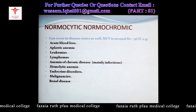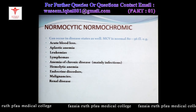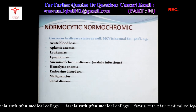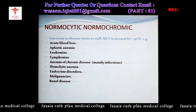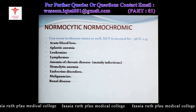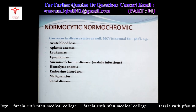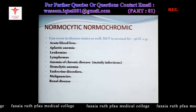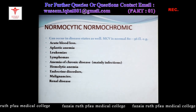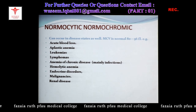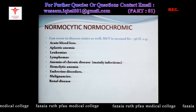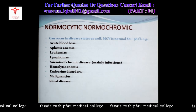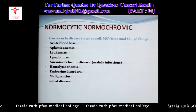A long list of causes of normocytic normochromic anemia includes acute blood loss — heavy trauma, road accidents, bullet injury, surgery — resulting in loss of blood and RBCs, leading to low hemoglobin and anemia.